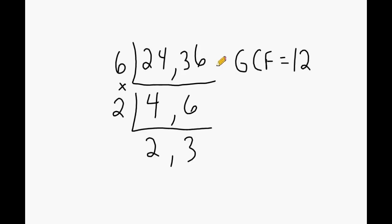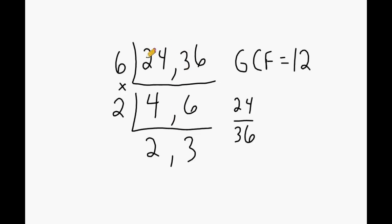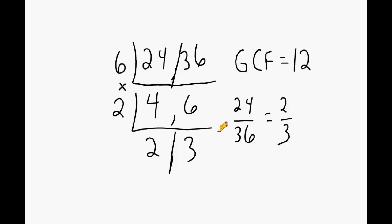What's great about this method is that whenever you have a fraction and are asked to simplify or express it in lowest terms, you divide the numerator and denominator by the GCF — and this method does exactly that. If we treat 24 and 36 as a fraction, the two numbers at the bottom are your answer. Reducing 24 over 36 gives you 2 thirds. So this method of finding the GCF is also a way to reduce fractions to lowest terms.